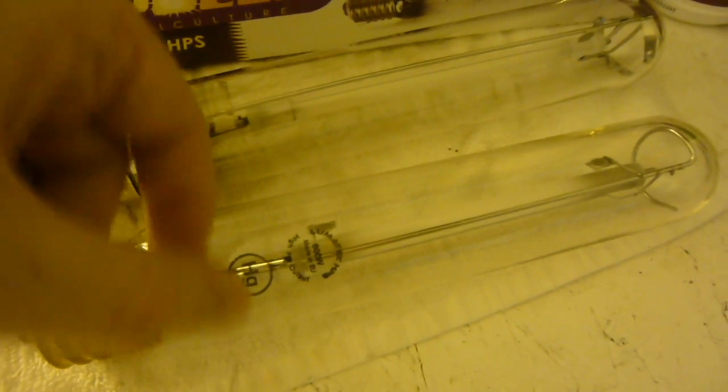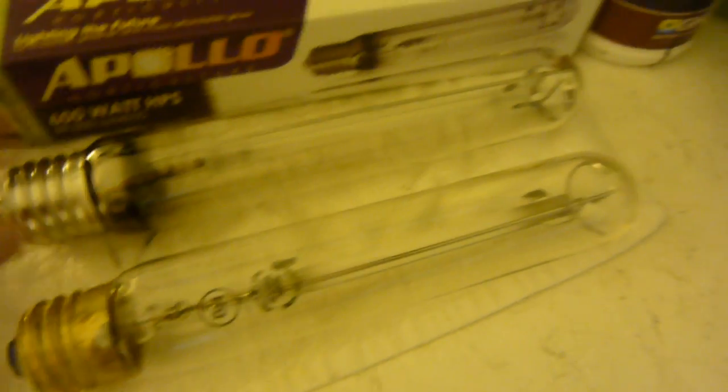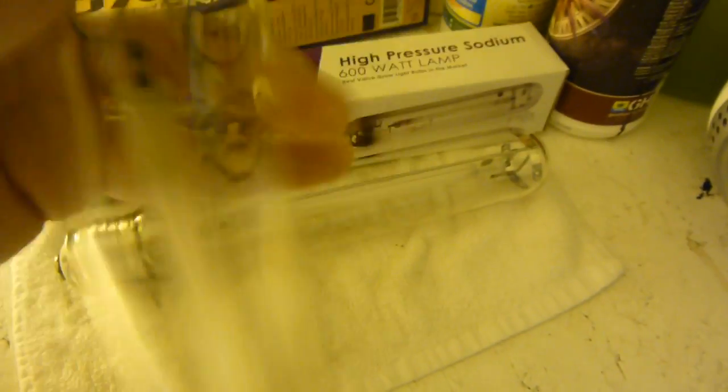When I hold this Lumatek up to this 20 dollar bulb, you all can hear how cheap this metal is, how cheap the glass is. You can hear that. And then the Lumateks always have this rattling cheap stuff falling apart inside. Here let me show you another bulb. This is a brand new Digilux. Look at the glass arc tube. You all see that right there? Brand new Digilux.